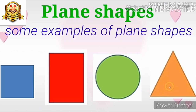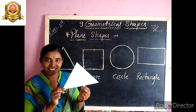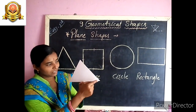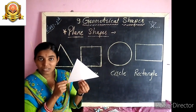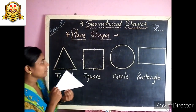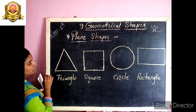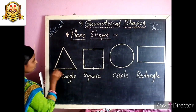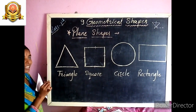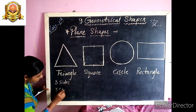Now we will see some examples of plane shapes one by one. Tell me, what is this? Yes, this is a triangle. This triangle has three sides: one, two, three sides. And the point where two sides meet is called a corner. So how many corners are there? One, two, three corners. Triangle has 3 sides and 3 corners.